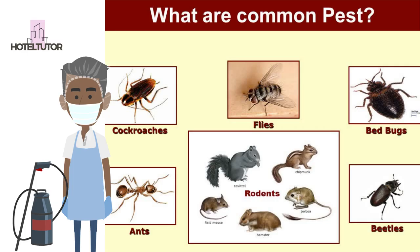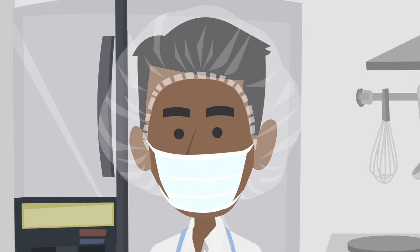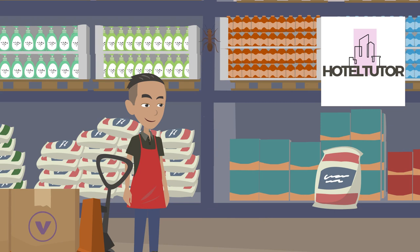In your hotel, you may have various varieties of pests. The common ones include cockroaches, flies, bedbugs, ants and rodents. You can broadly classify them into insects like flies, moths, cockroaches, etc. Your stored food products may also get affected by beetles, moths and other larvae.